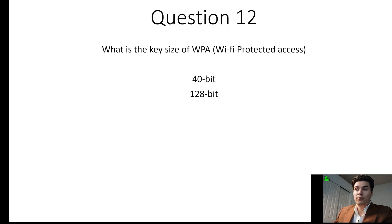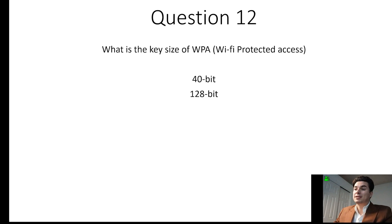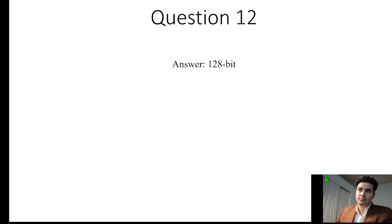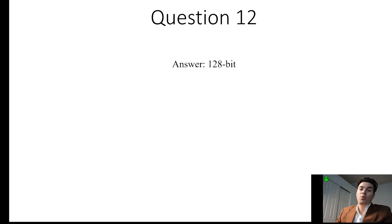Question 12. What is the key size of WPA, Wi-Fi Protected Access? That is 128 bits, while 40 bits would be used with WEP. WEP stands for Wired Equivalency Privacy and is one of the original Wi-Fi protocols utilized, and it can be broken within seconds.